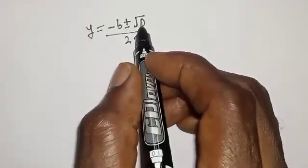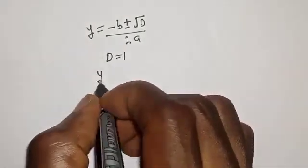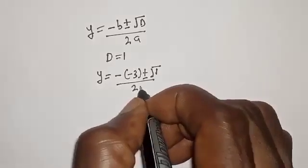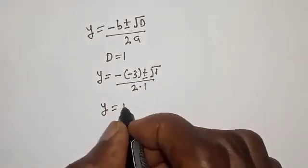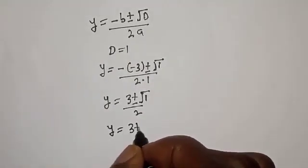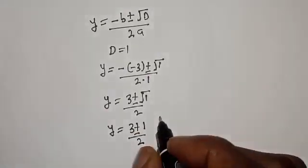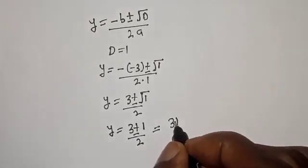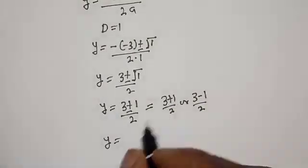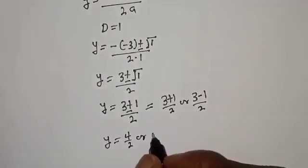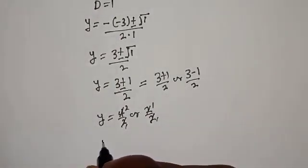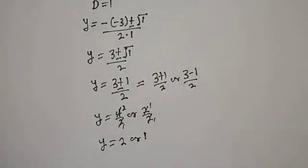Then y equals negative b plus or minus square root of d, over 2a. With d equal to 1, y equals negative bracket negative 3 plus or minus square root of 1, over 2. This simplifies to y equals 3 plus or minus 1, over 2. So y equals 3 plus 1 over 2, which is 4 over 2 equals 2, or y equals 3 minus 1 over 2, which is 2 over 2 equals 1. Therefore y equals 2 or y equals 1.